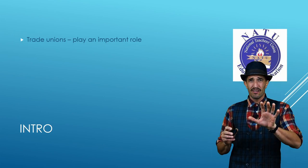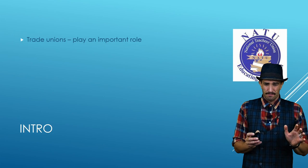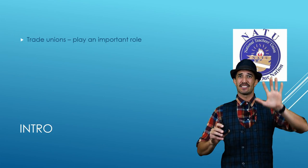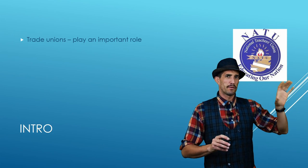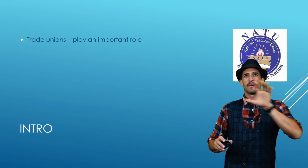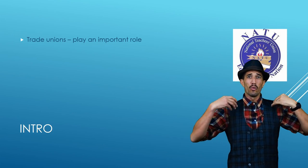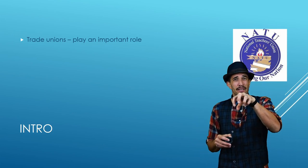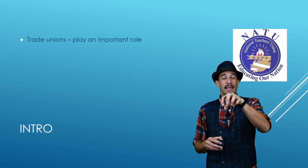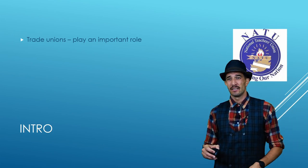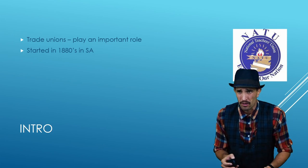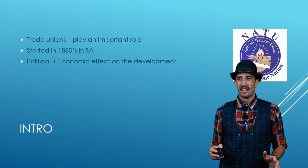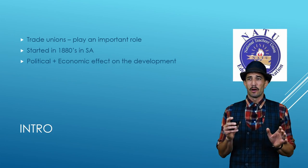Trade unions play a very important role in our society. They are the mediators between a business — the owners and the workers. In a business we have the workers and we have the business owner, they all play a different role in getting the final product. The relationship between the owner and the employee is quite important, and this is where trade unions come in — they play this massive role.